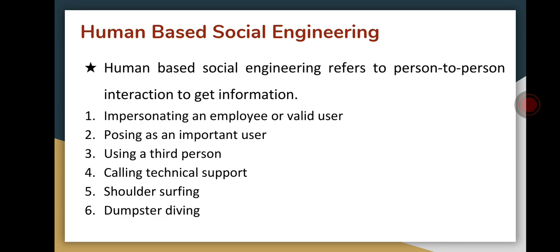The fifth method is shoulder surfing. In this technique, the attacker gathers information such as username and password by watching over a person's shoulder while they log into a system, which may help the attacker gain access.